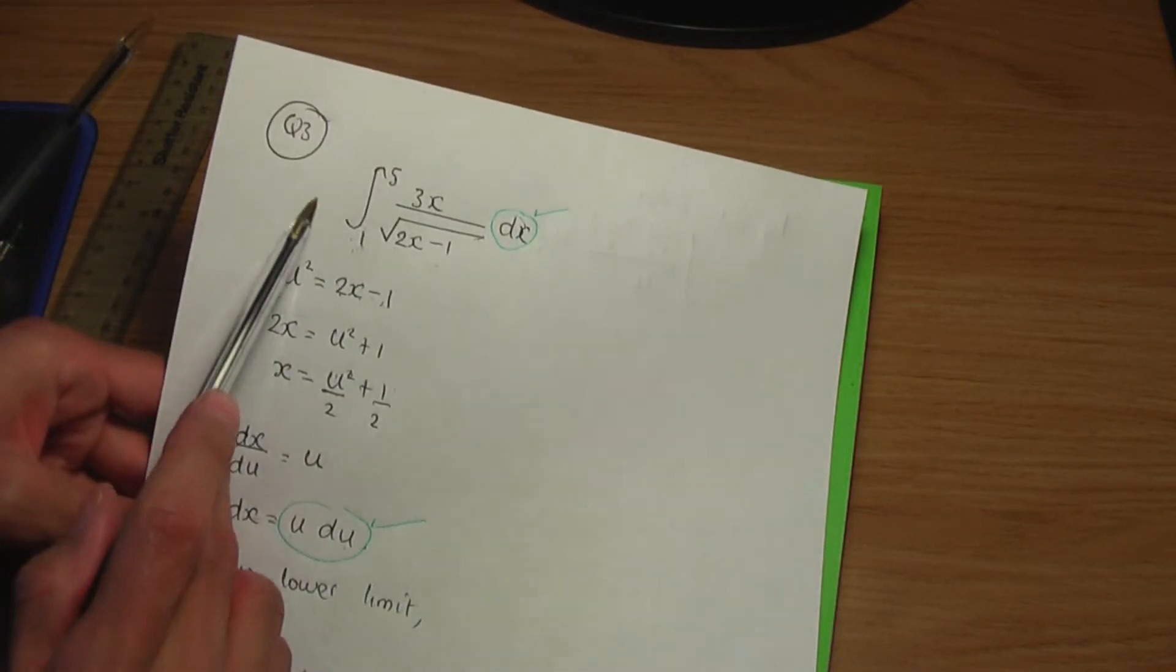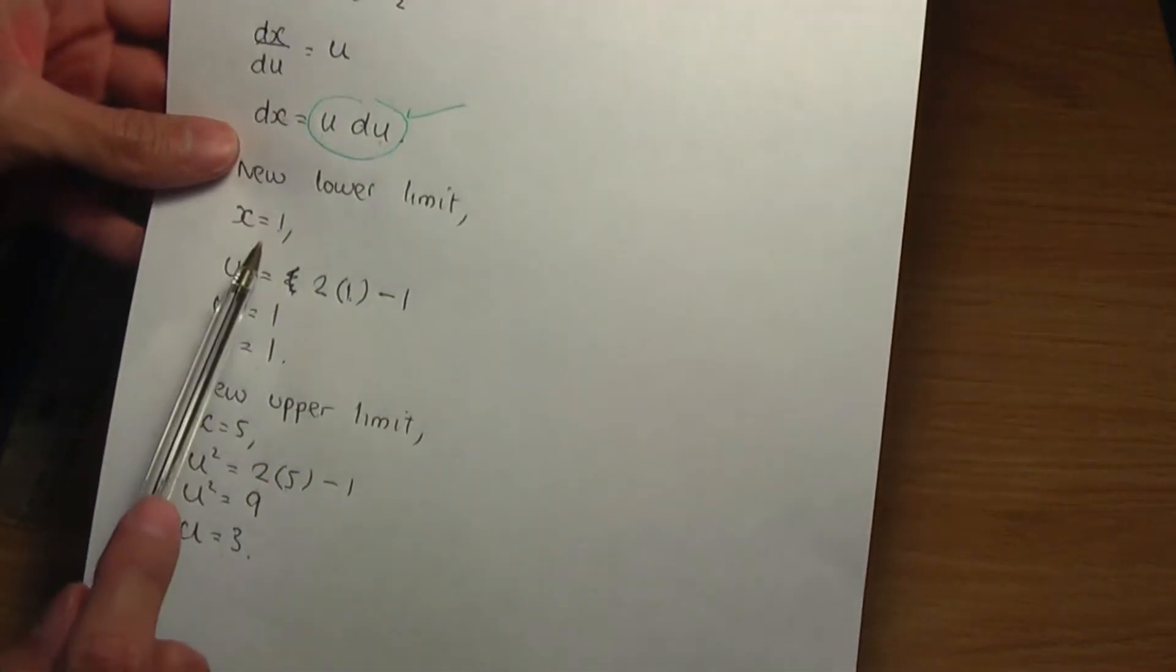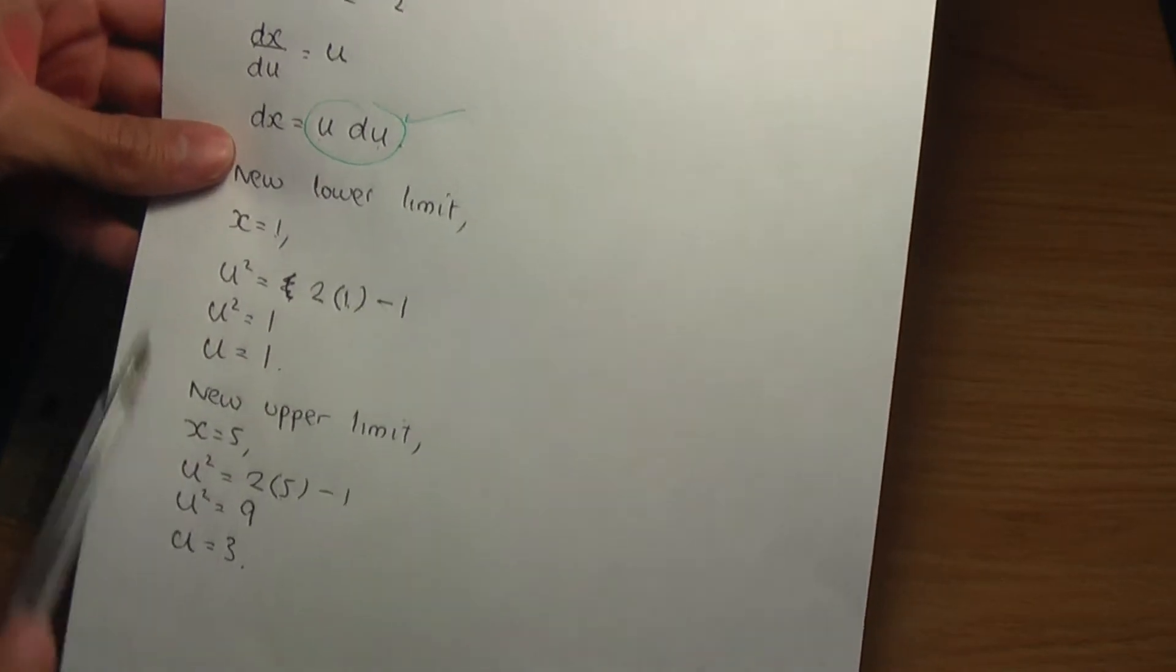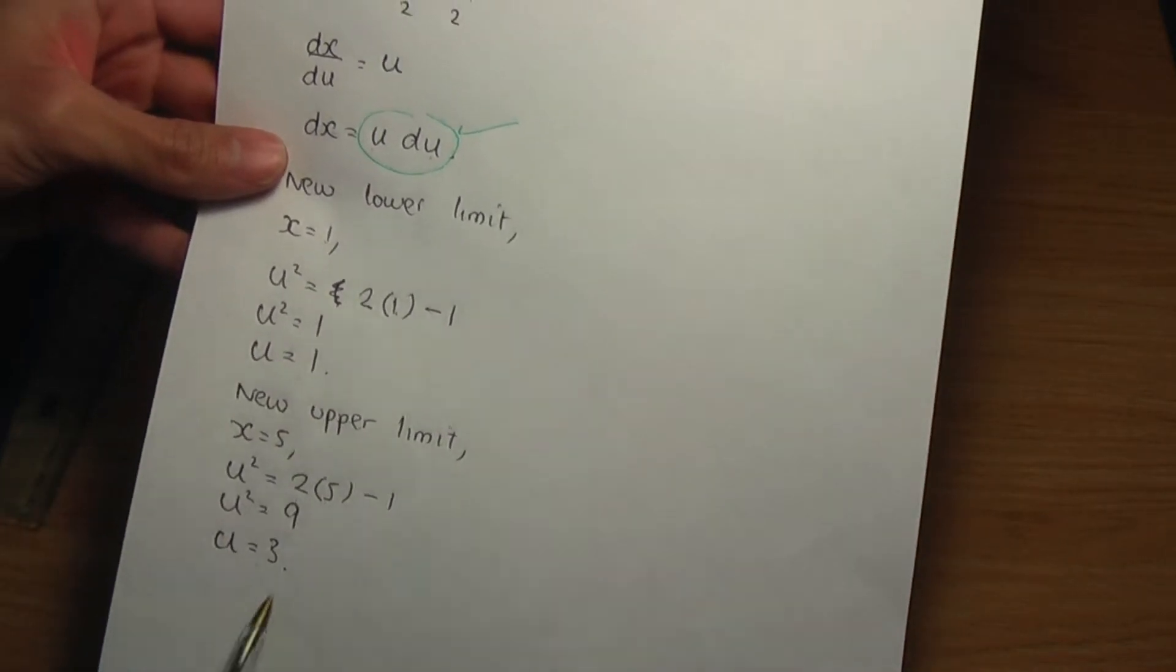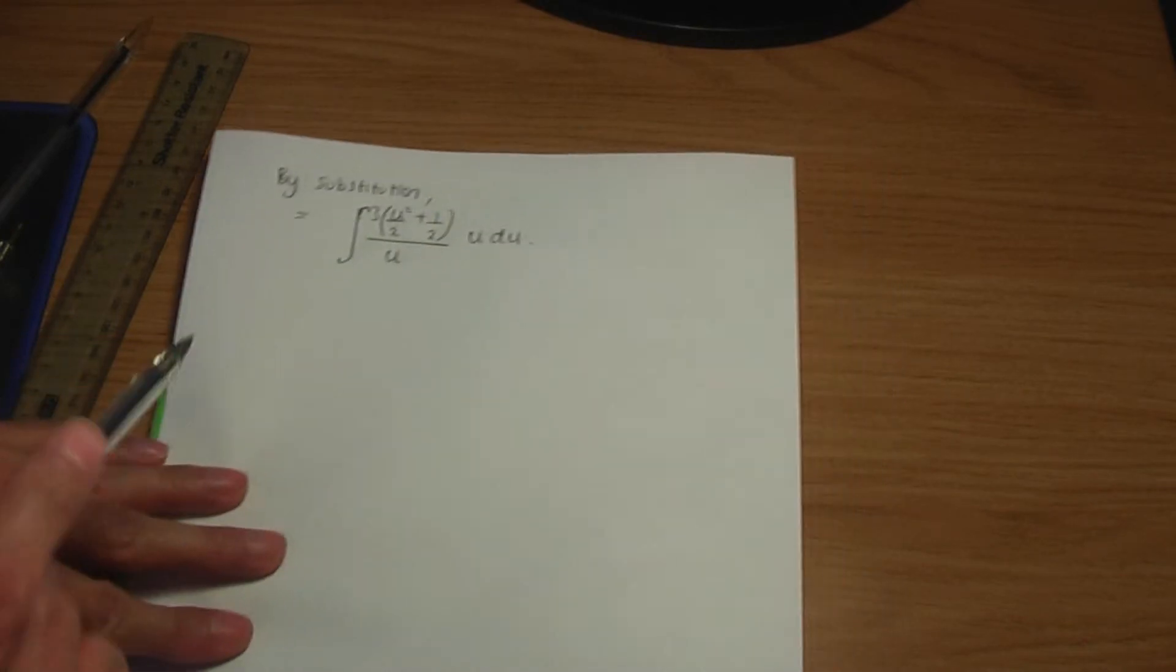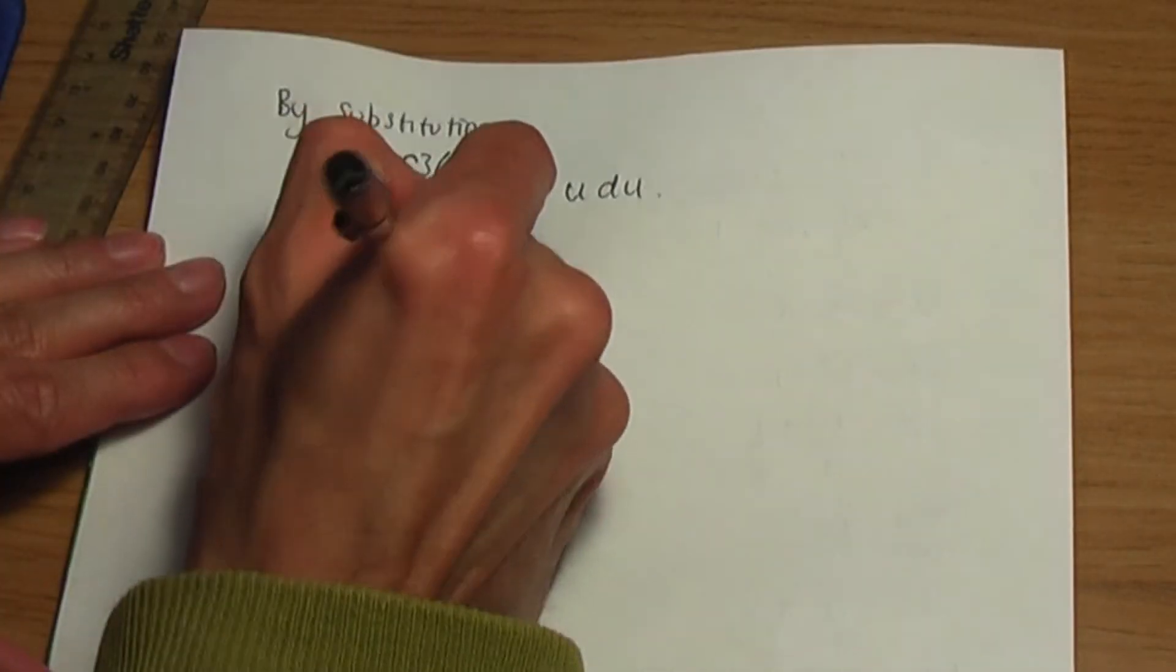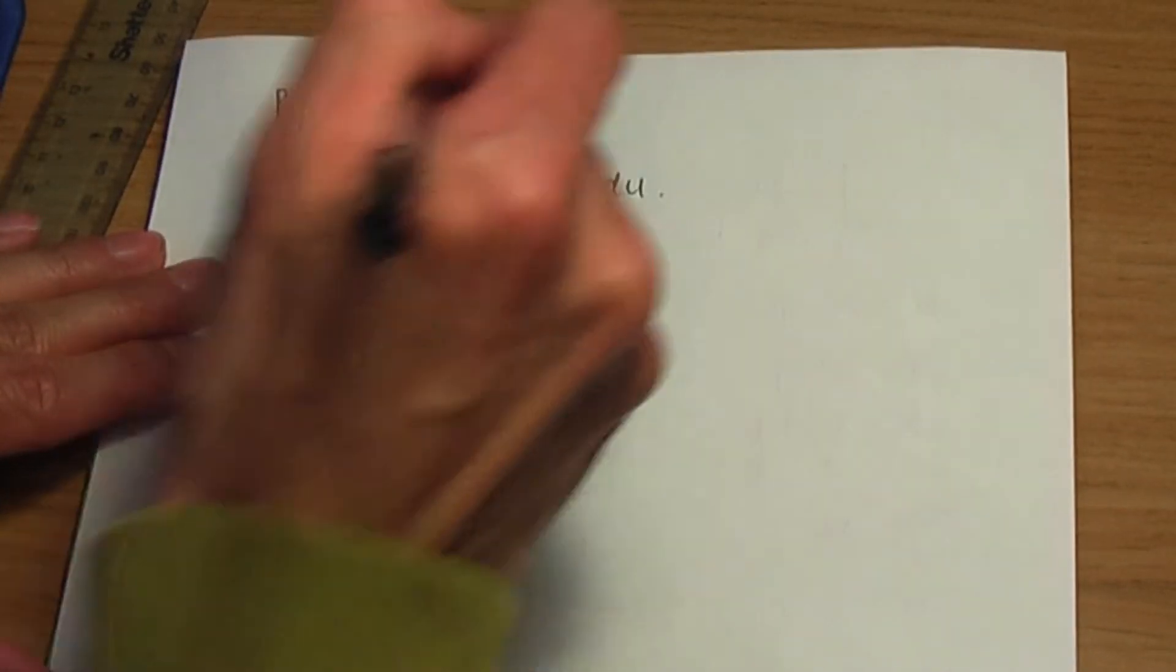Not forgetting the limits. The new lower limit is 1. The new upper limit is 3. So, let's include them. The new lower is 1. The new upper is 3.